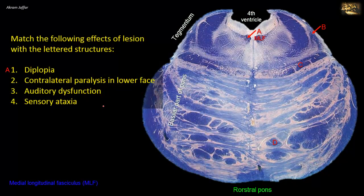B is the lateral lemniscus, which consists of fibers derived mainly from cochlear nuclei in the medulla. The lateral lemniscus terminates in the inferior colliculus of the midbrain and conveys information related to hearing. Thus, its damage results in auditory dysfunction.